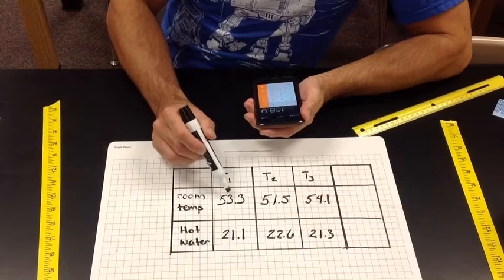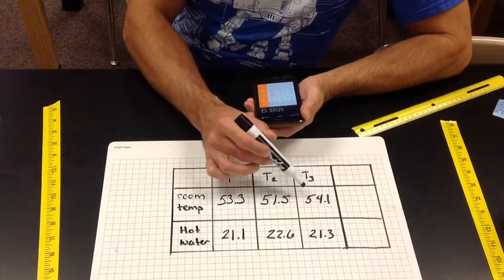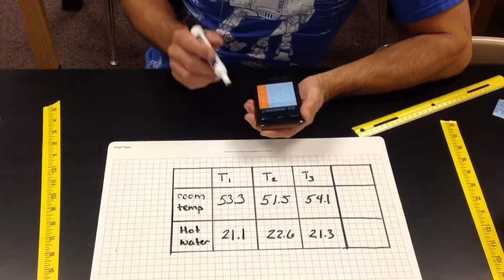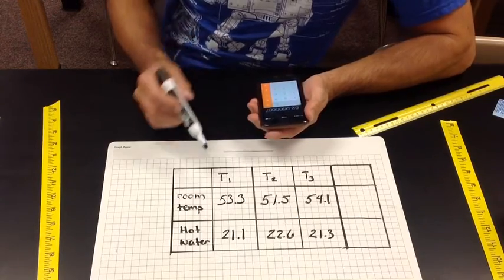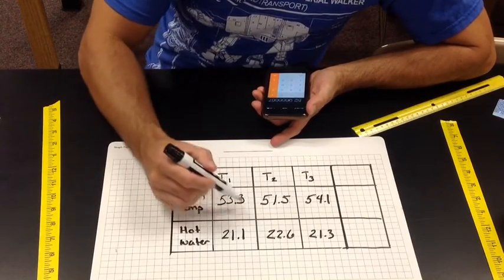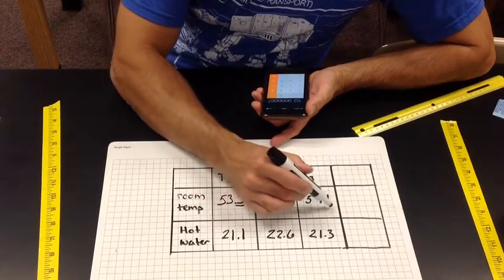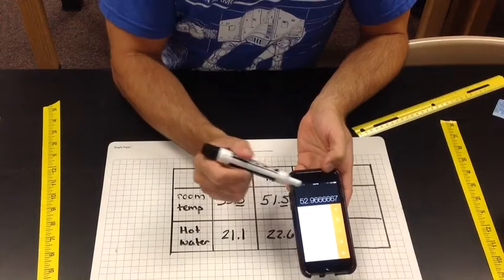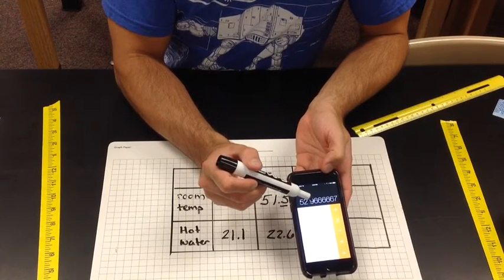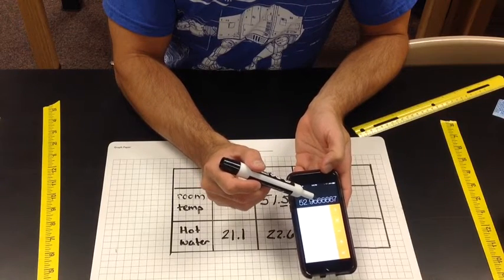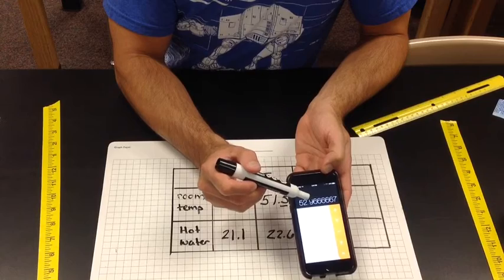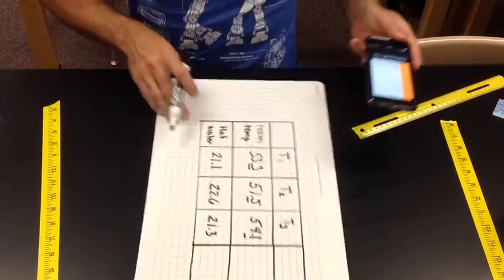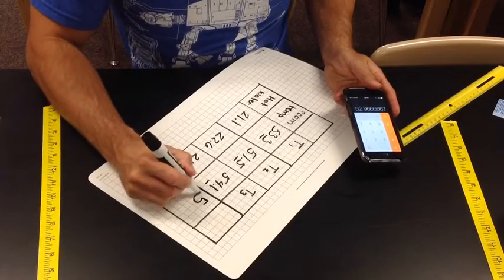Okay, so I add up 53.3, 51.5, 54.1. I divide that by three and I get 52.9666667. Now I've done each one of these numbers to the nearest tenth spot right here. So I'm going to round this number to the nearest tenth spot. So the tenth spot here is nine. I look next door. It's above a five. So the nine becomes a zero and I add one to the two. So 53 is my answer. It's a nice round number.